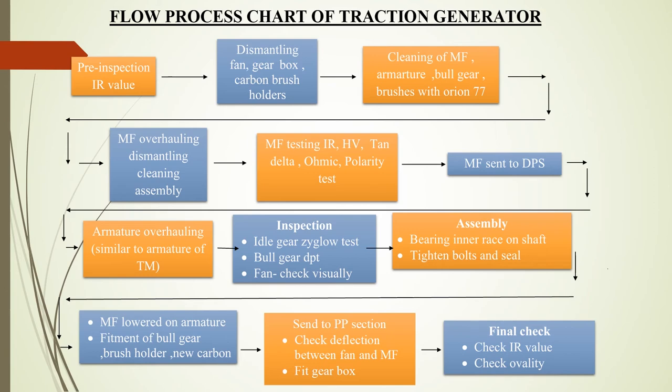After that, the Traction Generator is tested with tests like IR test, high voltage test, tan delta test, ohmic test, and polarity test. After that, the magnet frame is sent to the diesel POH shop. Armature overhauling is also similar to the Traction Motor. All these parts are then sent back to the Traction Generator section. An inspection of other parts happens wherein a Zyglow test is done on the idle gear, a dye penetration test is carried out on the bull gear, and the fan is checked visually.